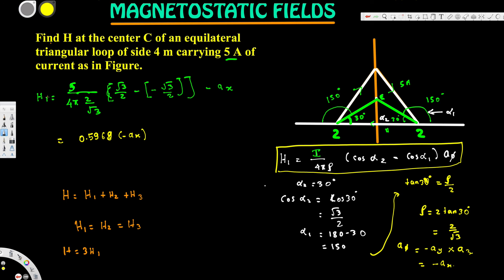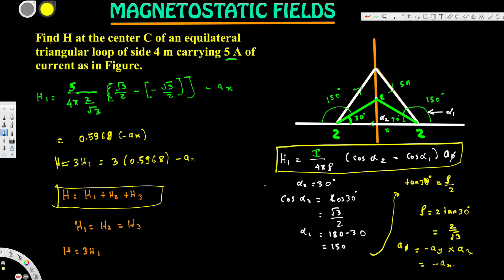Since it's an equilateral triangle, all sides contribute equally. We multiply by 3: H equals 3 times H1 equals 3 times 0.5968 in the negative aX direction, which gives us negative 1.79 aX amperes per meter. This is the final magnetic field intensity due to all three sides at center C of the equilateral triangular loop.